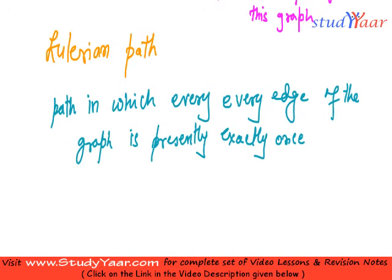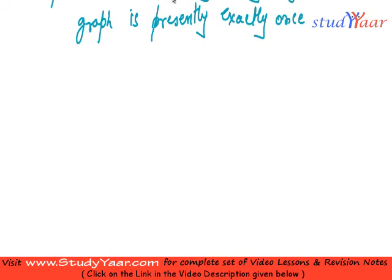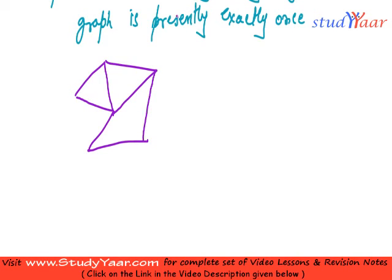Let us take some examples. Let us assume that I have a graph like this. Now let us try to see if this graph has a Eulerian path. Let me just label the vertices: V1, V2, V3, V4, V5, and V6.